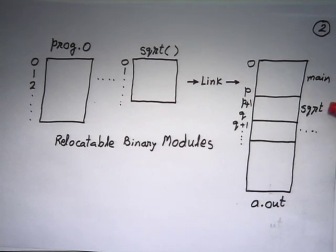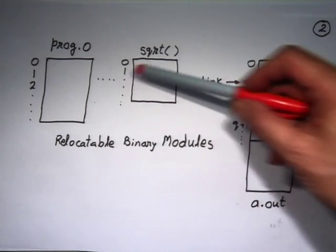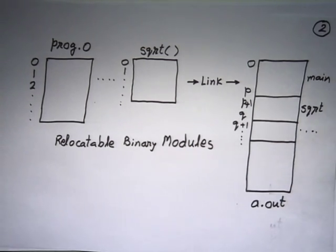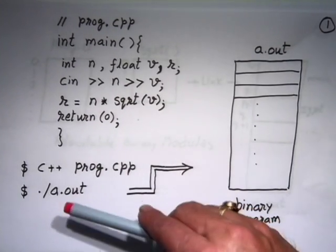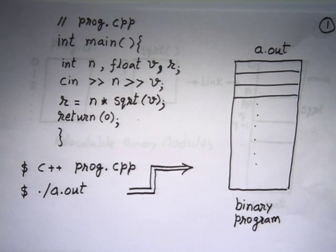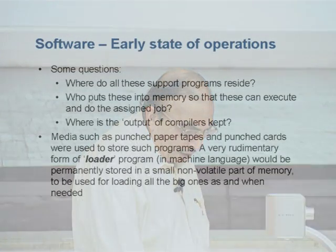All relocated code for square root and other modules gets placed in sequence, and the entire thing becomes the final executable. The square root and other utility functions written by others are part of standard libraries; the actual task of linking is done by the C++ system — the GNU GCC compiler system — which does this linking. At the end of the day the final file goes to the disk, and somebody still has to take that file from the disk and load it physically into the allocated memory.